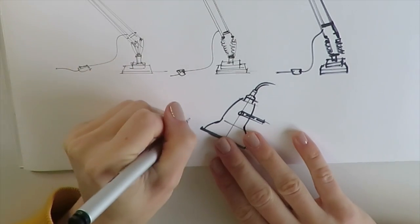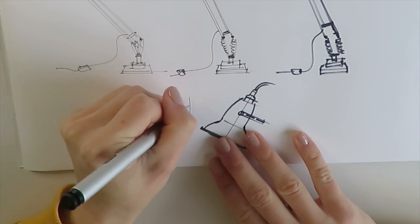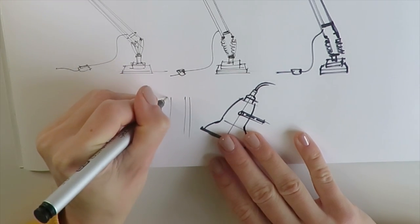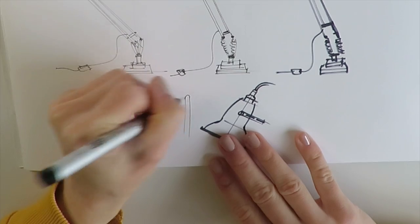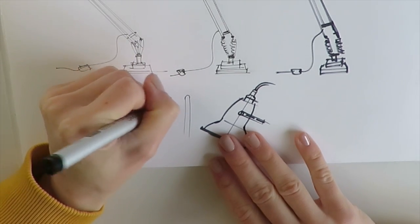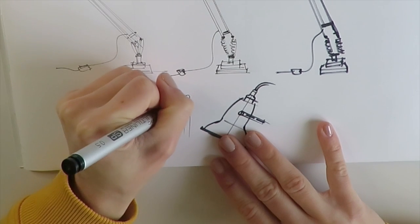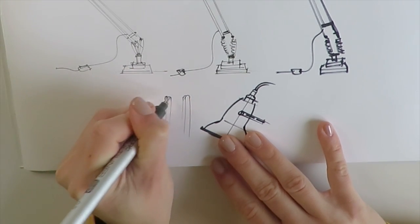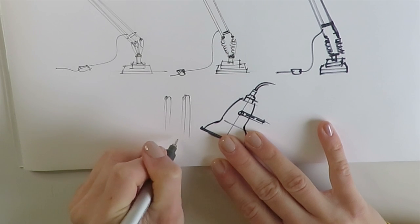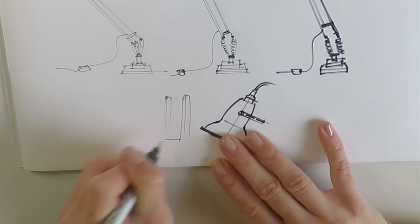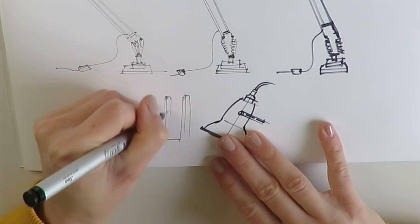Now I'm switching to my medium size liner. This one is Copic Multiliner 0.5 and we continue drawing a new quick study of another element of our fixture. So more and more we immerse ourselves into the design, into the secrets of design behind this task lamp.